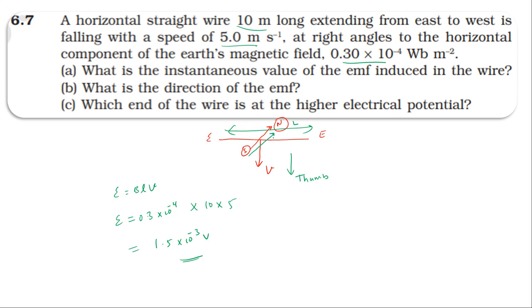The field is from south to north. Using Fleming's right hand rule: thumb finger, four fingers, center finger perpendicular - thumb for velocity direction, four fingers for field direction.